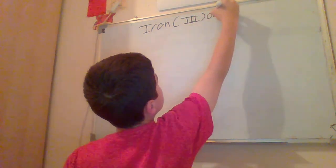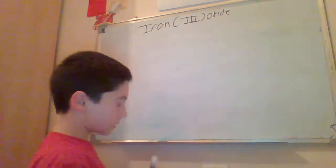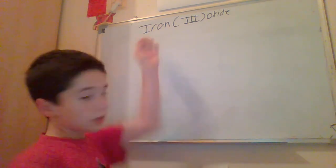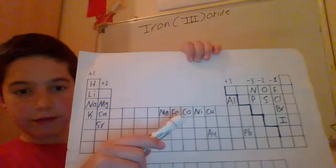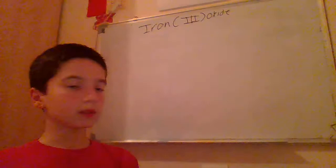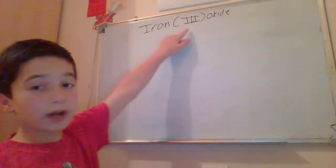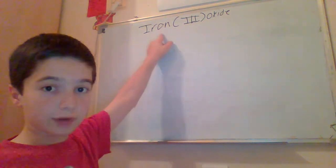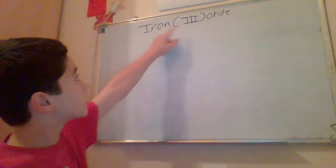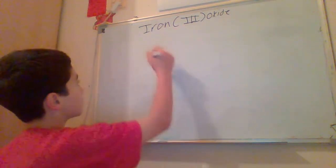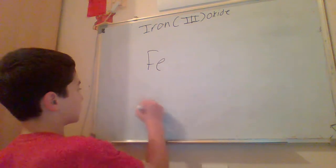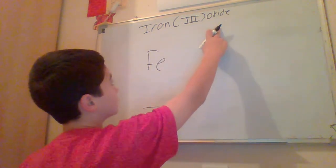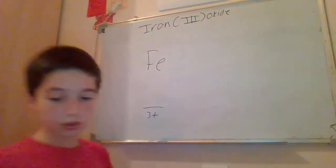Our next example is iron(III) oxide. Iron is in the periodic table as Fe. The Roman numeral three tells us the charge of iron, which is three plus. Oxide is oxygen, which has a minus two charge.